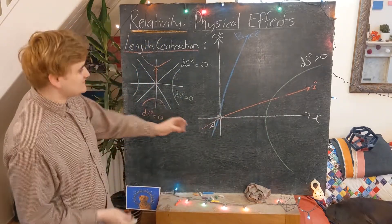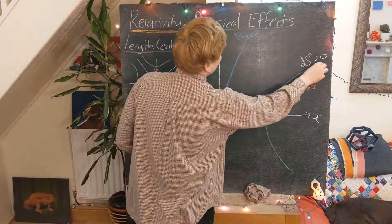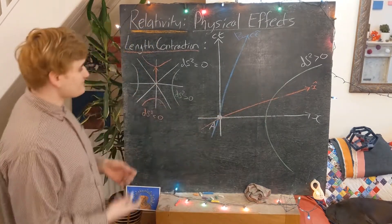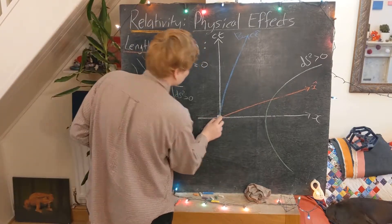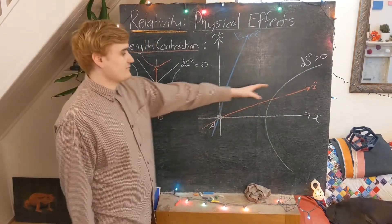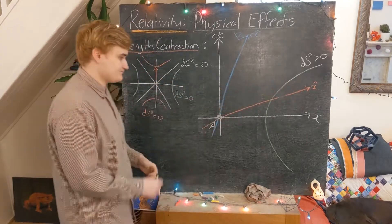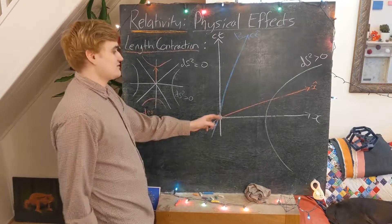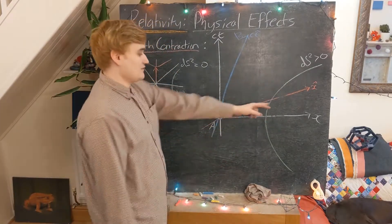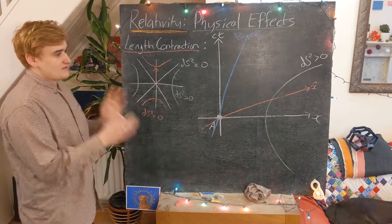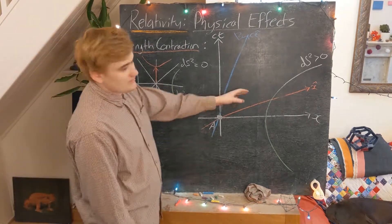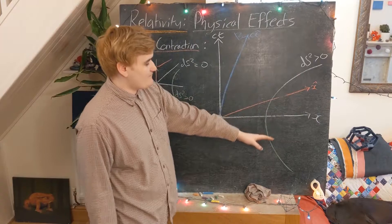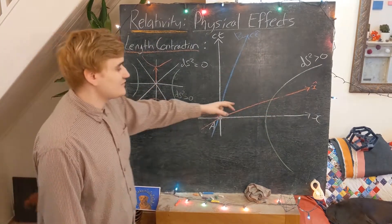This green line is a curve on which the value of the line element is constant and positive. We can use this effectively as a measuring stick on our picture, and use it to compare distances in two different reference frames. Any point on this curve always has the same Minkowski separation from the origin. Because we're conveniently placing our coordinate systems with their origins together, we can directly correlate these two reference frames using this ds² curve.